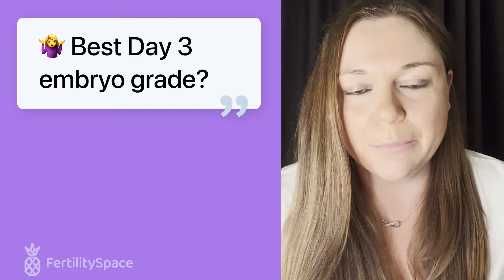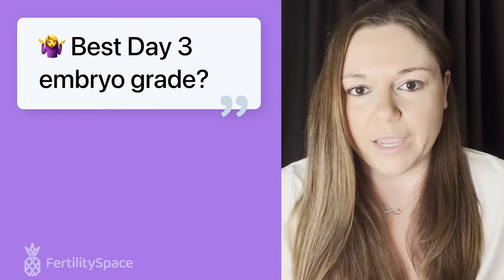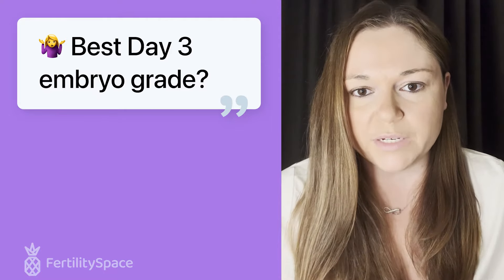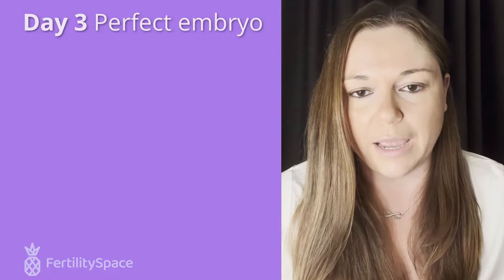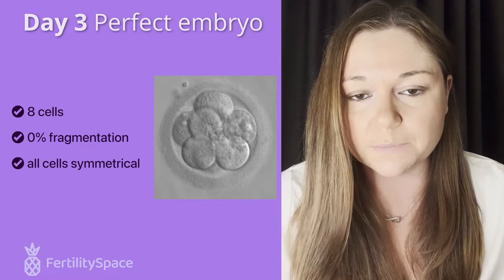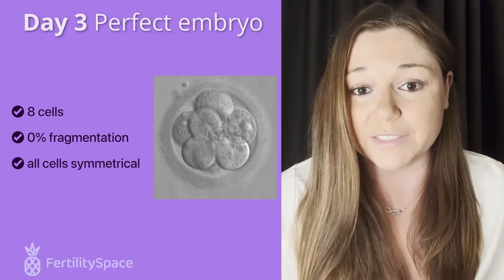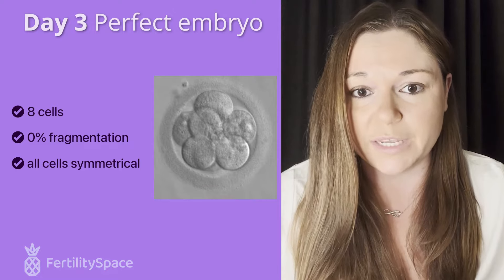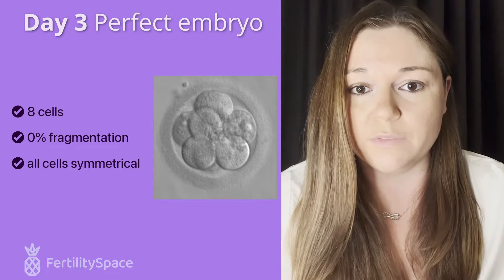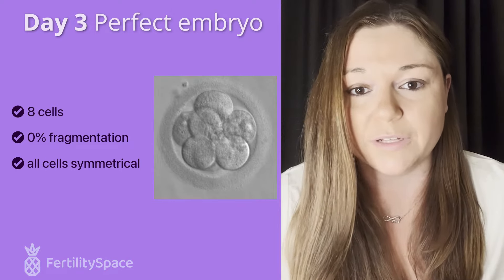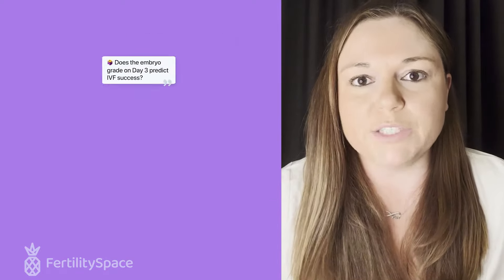So what does the perfect day three embryo look like? On day three, the perfect embryo would have eight cells, 0% fragmentation, and all of the cells would be perfectly symmetrical.